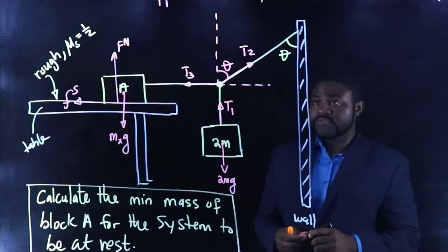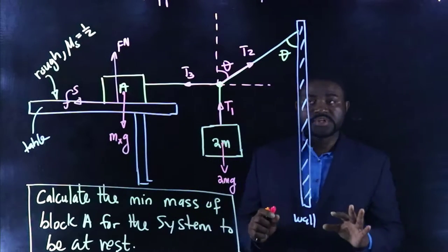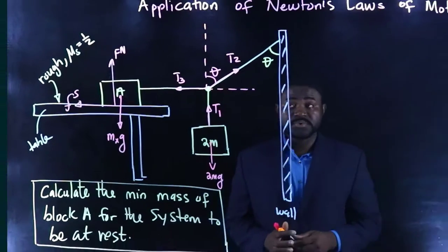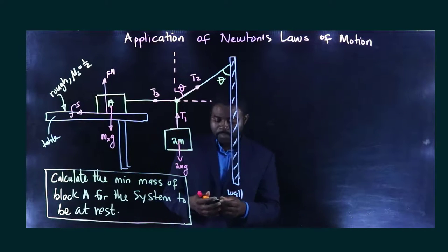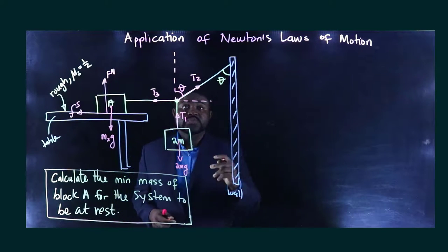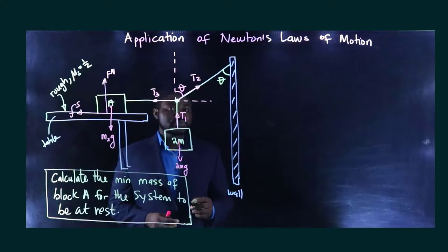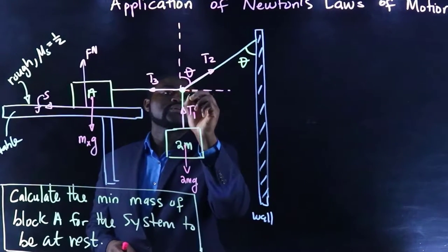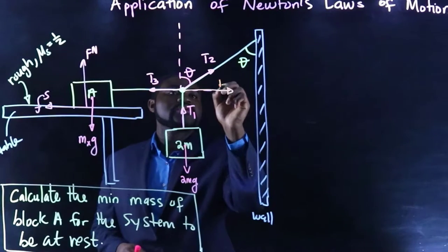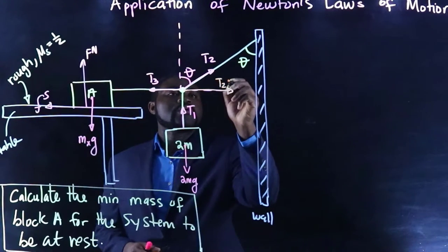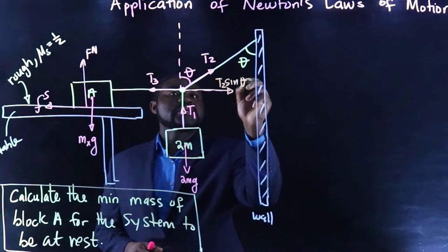So we've annotated the forces in the diagram. Now, we are going to treat each object separately. Now, this is a knot. And you would realize that we could resolve or split T2 into its components. This will be T2 sine theta.